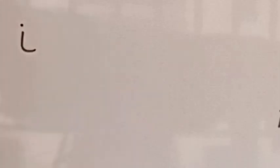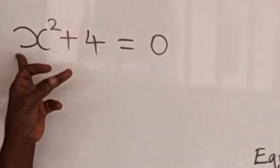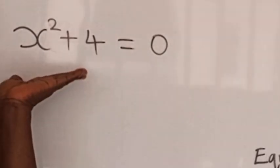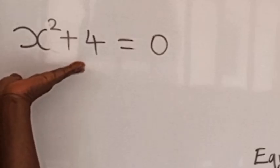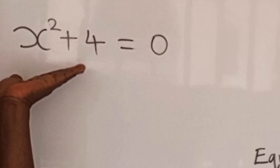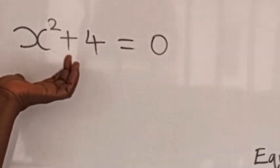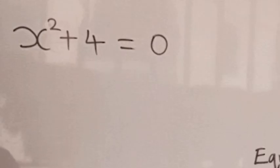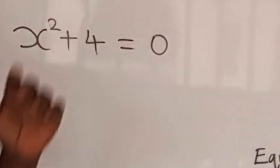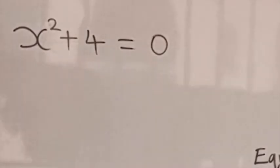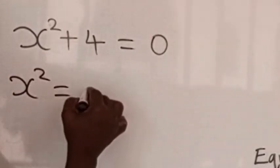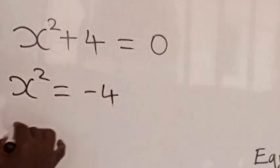Now look at this problem: x squared plus four equal to zero. As simple as it looks, it is not solvable in the set of real numbers, because the set of real numbers has no answer to the square root of a negative number. But with the introduction of complex numbers, we have that x squared is equal to minus four.